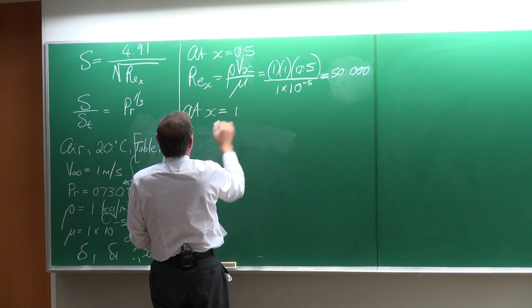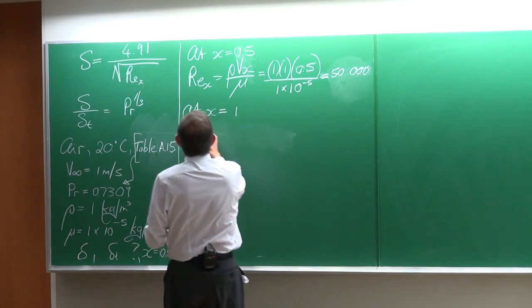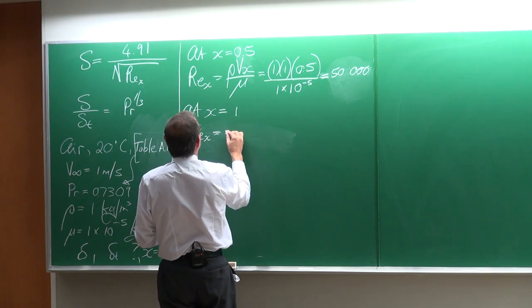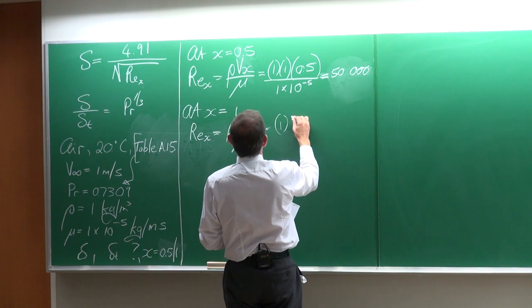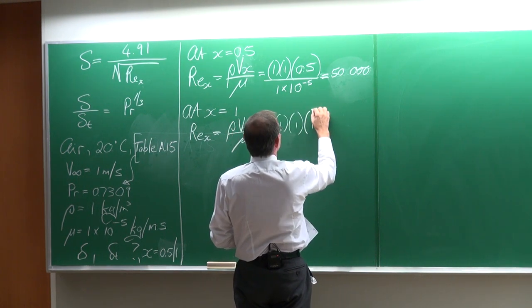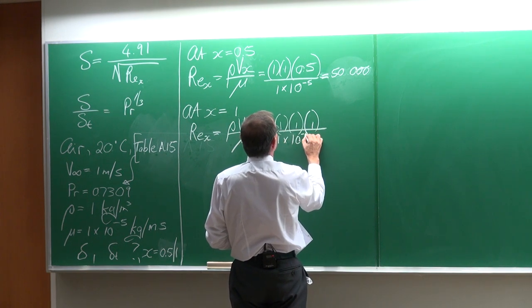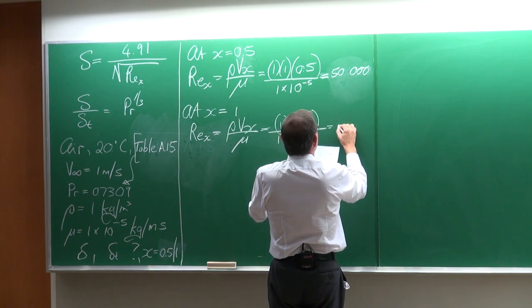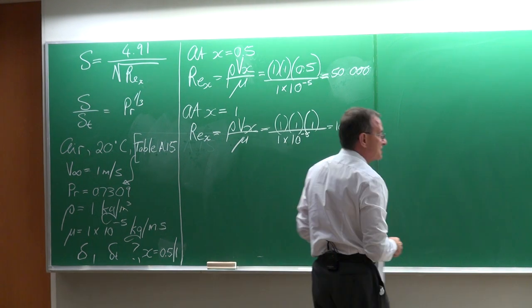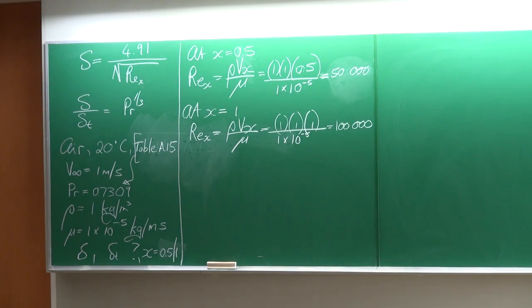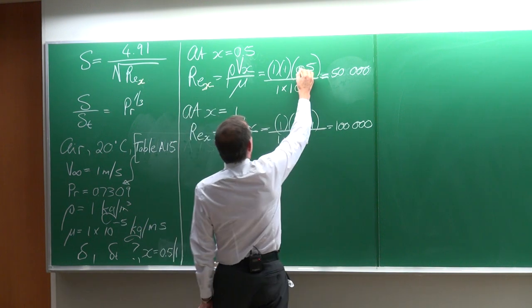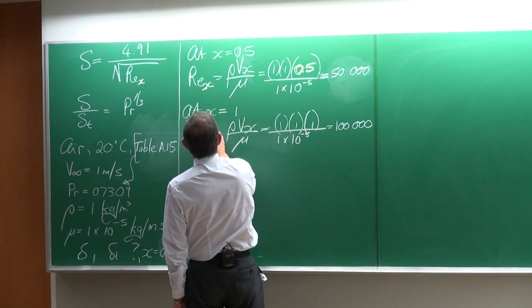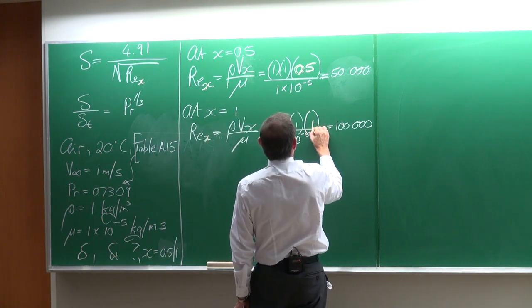Let's also calculate the Reynolds number for the case where x is equal to 1 meter. The Reynolds number is ρVx divided by the viscosity: density is 1, velocity is 1, x is 1, divided by 1 × 10⁻⁵, giving us 100,000. This is the local Reynolds number — at x = 0.5 it is 50,000, and at x = 1 meter from the leading edge it is 100,000.